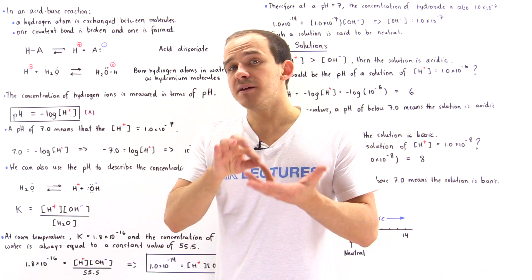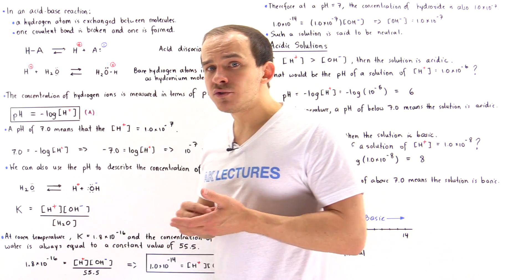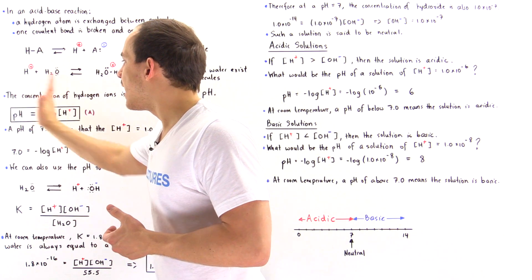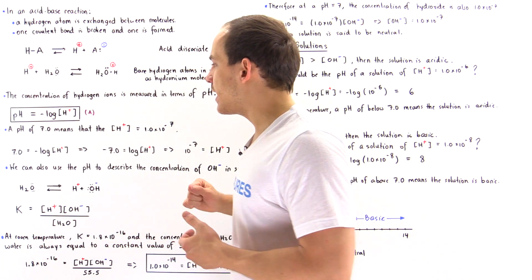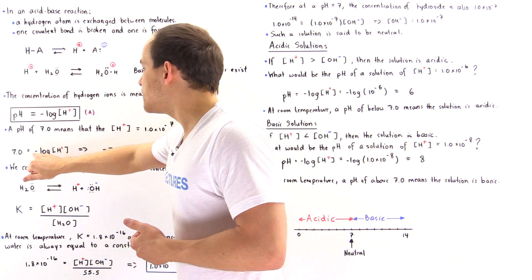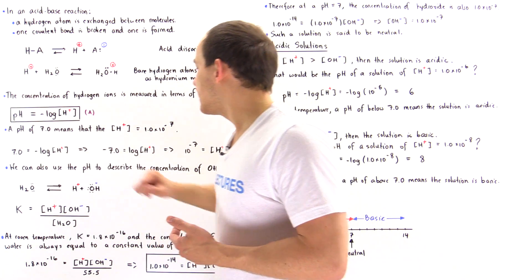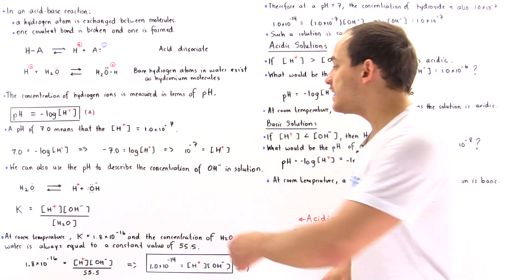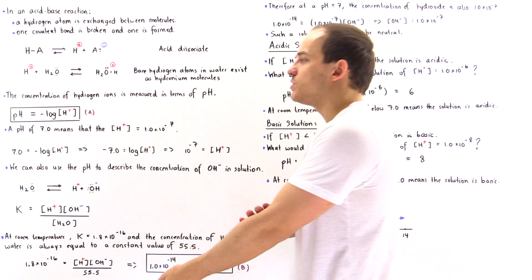For example, if the pH is equal to 7 at room temperature, we set the left side of the equation equal to 7 and solve for the hydrogen ion concentration. We negate both sides, then raise both to the power of 10 so the log cancels out, and we get that the concentration of the hydrogen ion is equal to 1.0 × 10⁻⁷ when our pH is equal to 7.0.